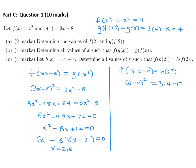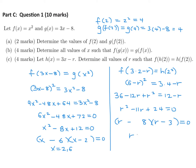Expanding: 36 minus 12r plus r squared equals 12 minus r. So therefore r squared minus 11r plus 24 equals 0. This factors as (r minus 8)(r minus 3), so therefore r equals 3 or r equals 8.